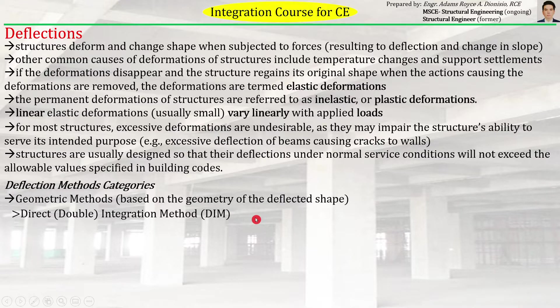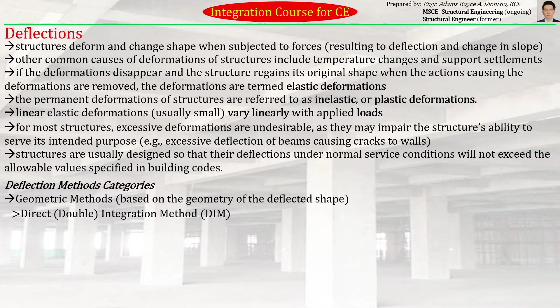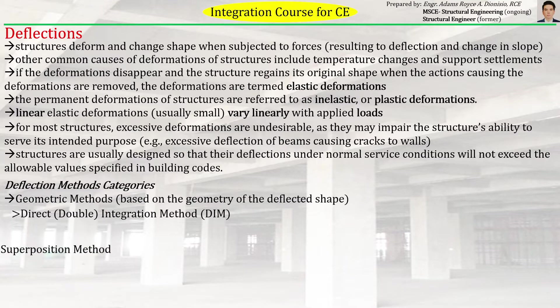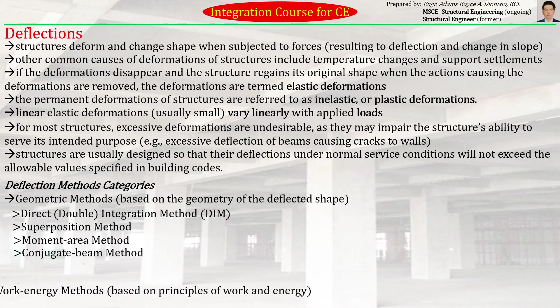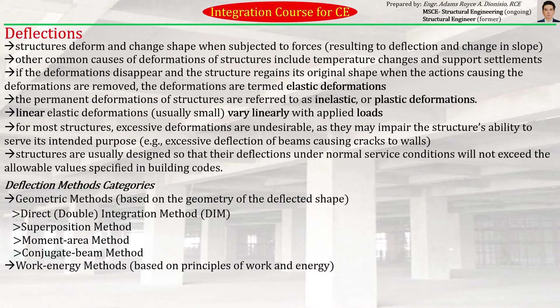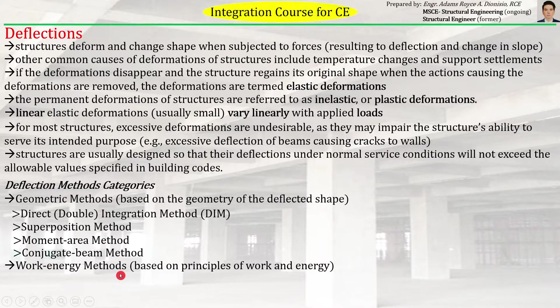The first category is the geometrical or geometric methods that are based on the geometry of the deflected shape. There are different methods falling under the geometric methods, which are the direct or double integration method (DIM), the superposition method, the moment area method, and the conjugate beam method. The second category is the work energy method, which is based on the principles of work and energy. The methods under it are the virtual work method and Castigliano's theorem.